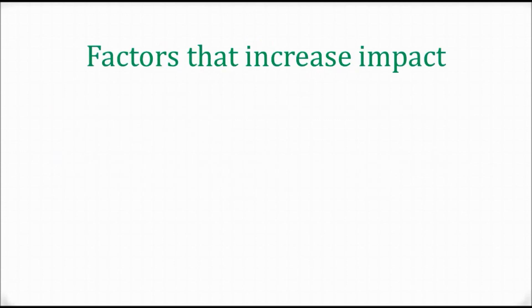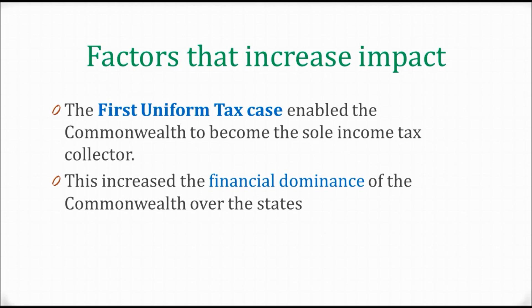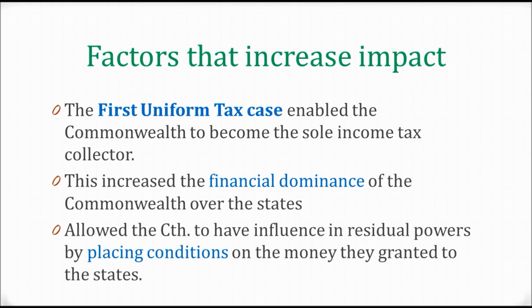Some factors that have increased the impact of High Court interpretations: firstly, the First Uniform Tax Case enabled the Commonwealth to become the sole income tax collector. That increased the financial dominance of the Commonwealth over the States, meaning the Commonwealth is then able to have influence in residual powers by placing conditions on the money they grant to the States. Because of the First Uniform Tax Case, the Commonwealth collects the vast amount of tax revenue, and when they give that money to the States they can place conditions on how it is spent in residual powers, which greatly increases the power of the Commonwealth over the States.